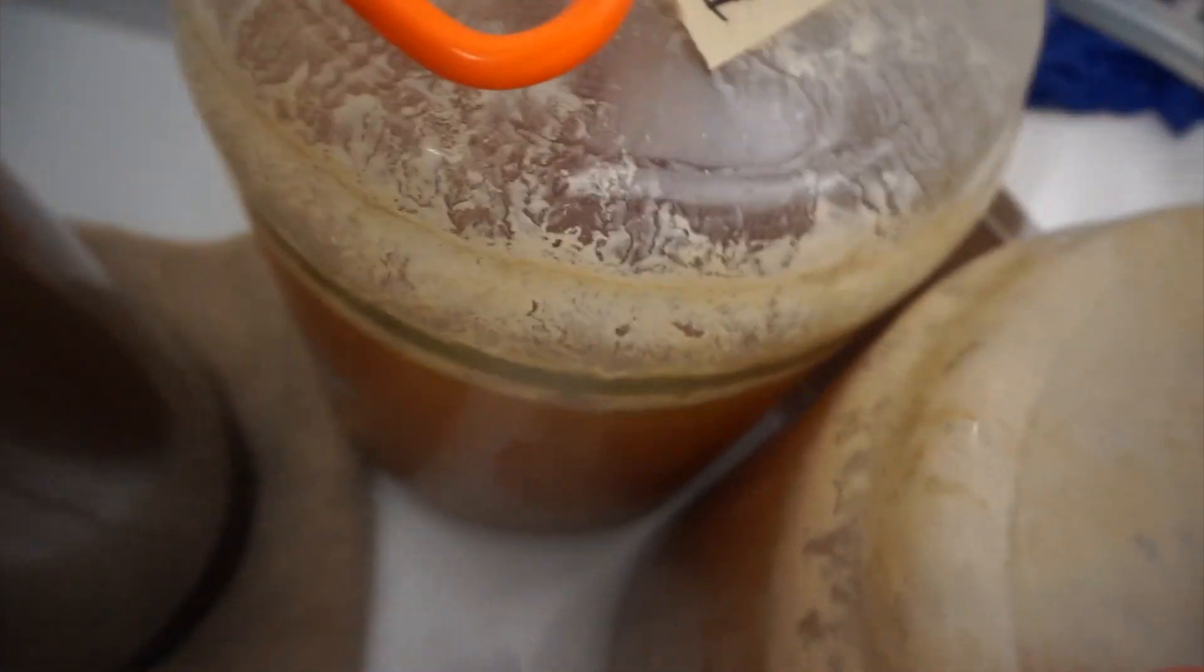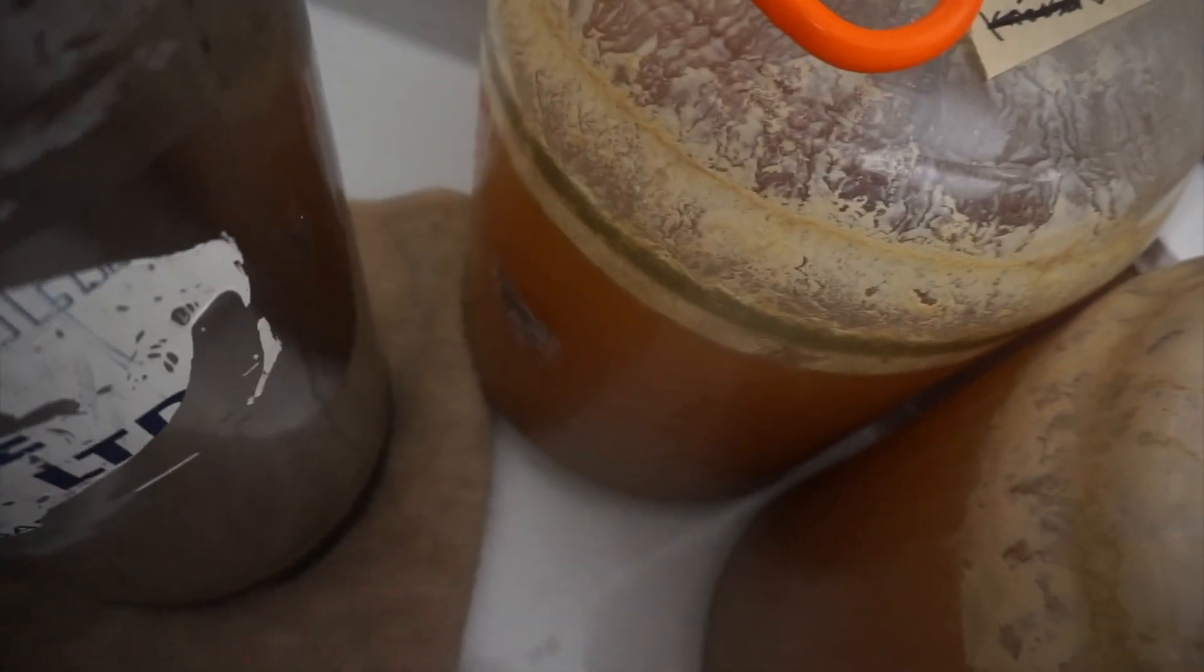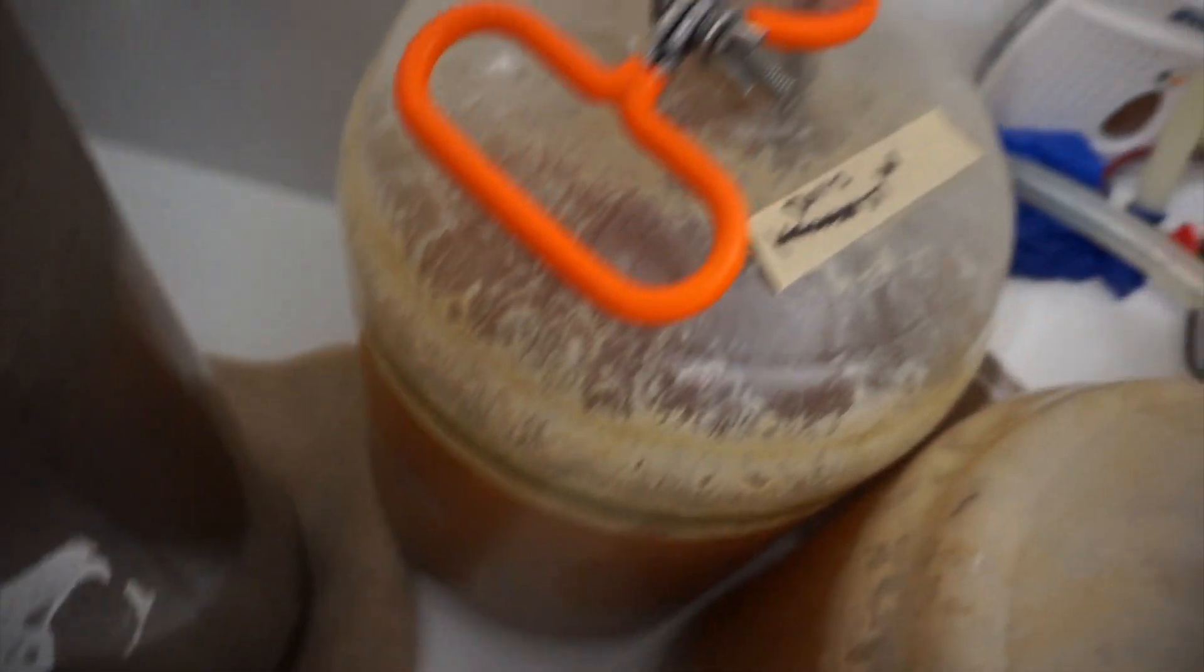As we get closer, we'll tilt the carboy over on its side and get the last bit of the beer that we can without getting any of the trub and yeast in there that's been compacted from cold crashing. So we'll be back when this keg's full.